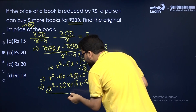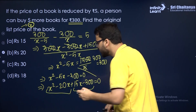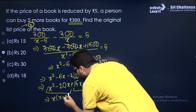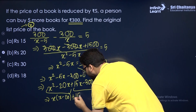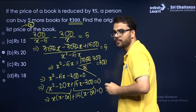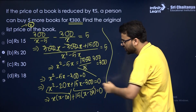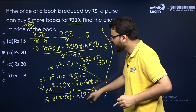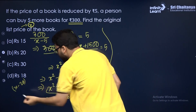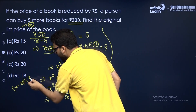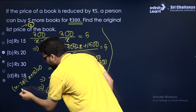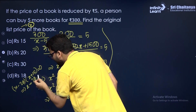Group the terms: first group X(X − 20), second group 15(X − 20) = 0. Taking (X − 20) as common: (X − 20)(X + 15) = 0. So X = 20 or X = −15.